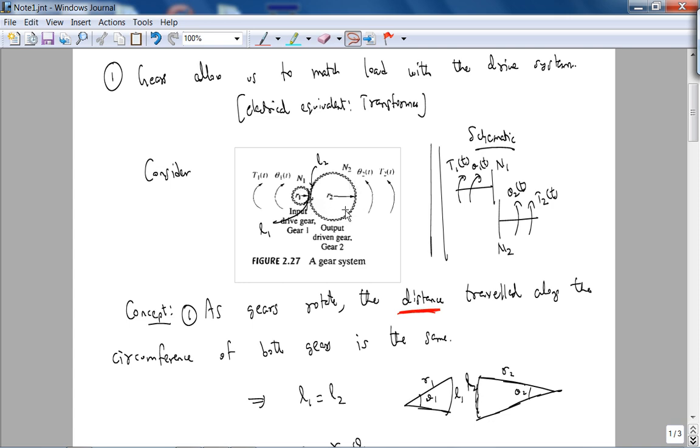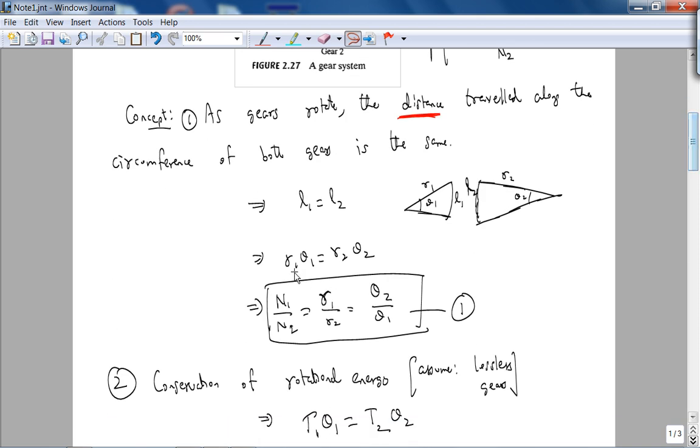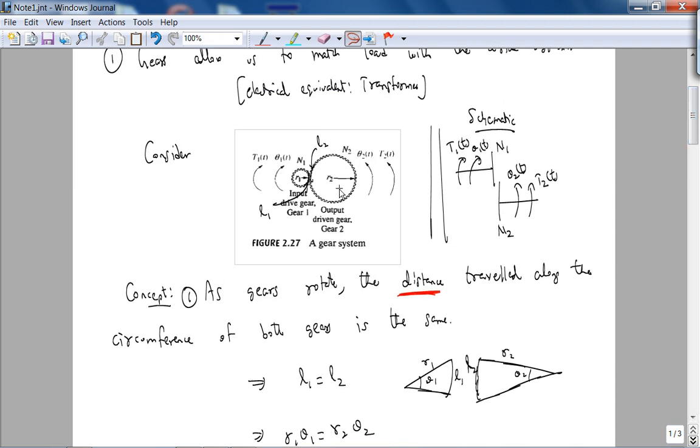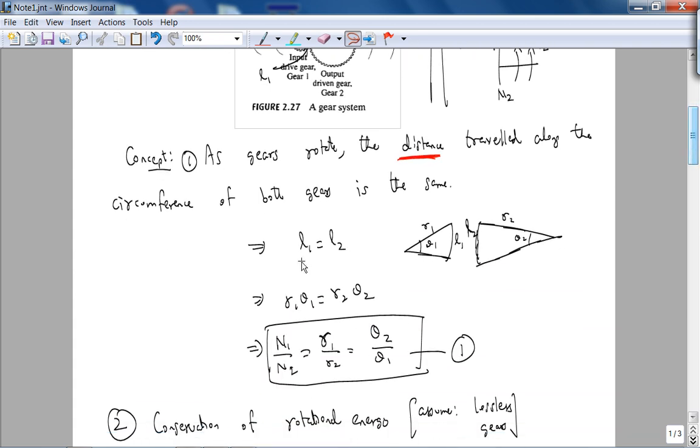...for this gear is opposite to the direction of rotation of this gear, and that's not conveyed in this equation. That's fine for now. As we'll see in tomorrow's lecture, when you draw a free body diagram for this system, it will become important. But for now, L1 equals L2, so r1·θ1...